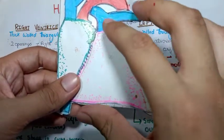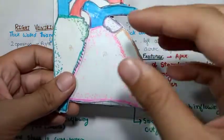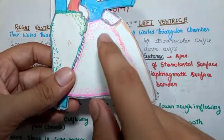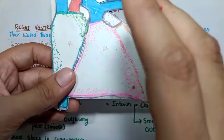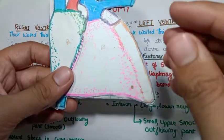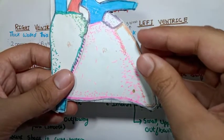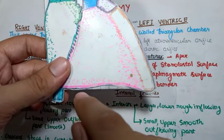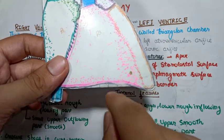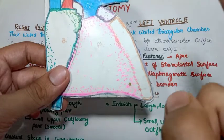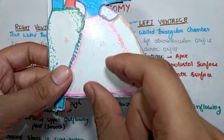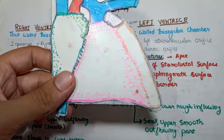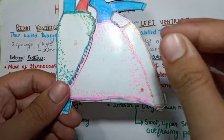You can see the right ventricle is situated on the anterior side and the left ventricle on the posterior side. So the sternocostal surface is mostly occupied by the right ventricle, while only a small portion is occupied by the left ventricle. Regarding the diaphragmatic surface, a large portion is occupied by the left ventricle, while only a smaller portion belongs to the right ventricle.